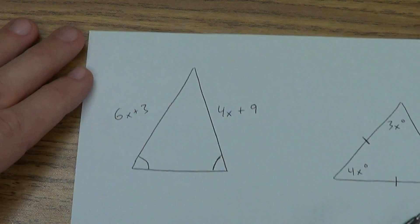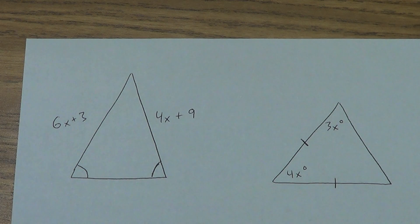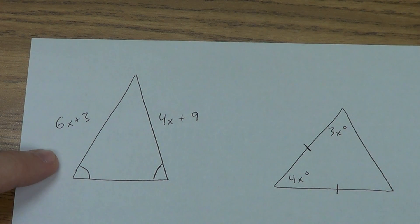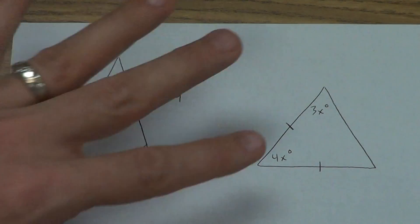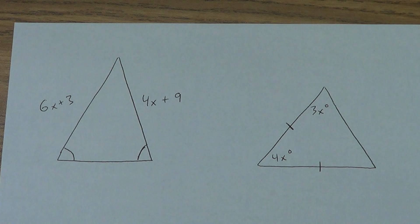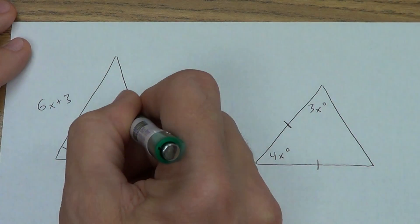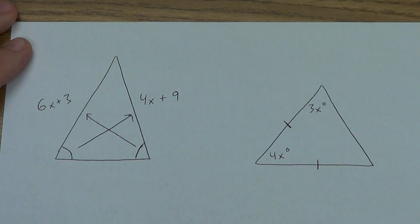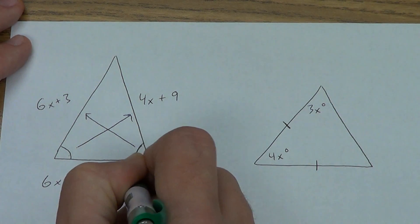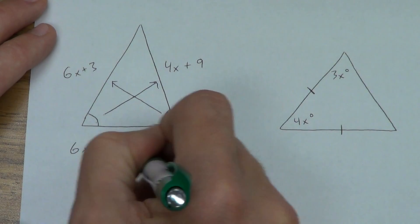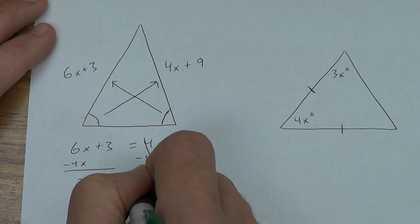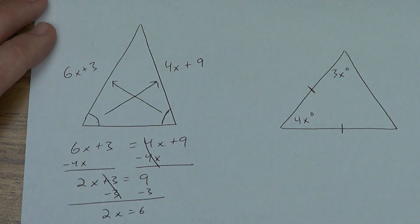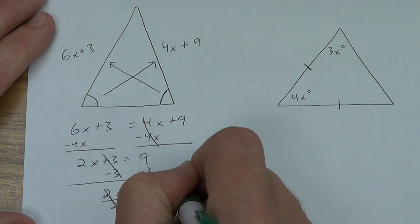Now let's switch over to some algebra. Copy these two pictures down and try to solve them. For the first one, we have congruent angles, so we work across the triangle — those two sides must be congruent. 6x + 3 has to equal 4x + 9. Subtract 4x from both sides: 2x + 3 = 9. Subtract 3: 2x = 6. Divide by 2: x = 3. Check: 6(3) + 3 = 21, and 4(3) + 9 = 21. ✓